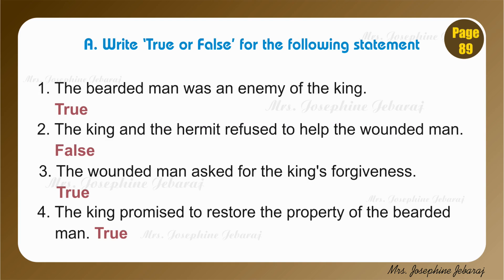Moving on to section 2, book exercises, page number 89. A. Write true or false for the following statements. Number 1. The bearded man was an enemy of the king. Yes, he was a warrior from another kingdom who came to kill the king. So the sentence is true.